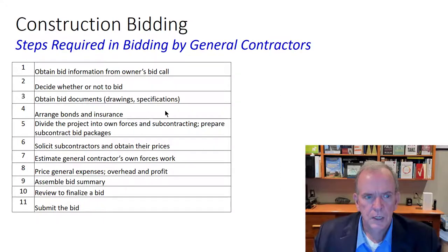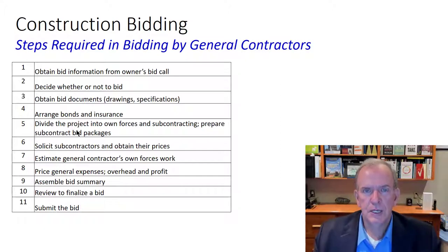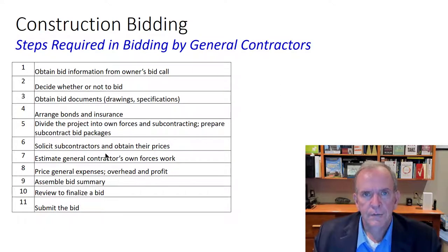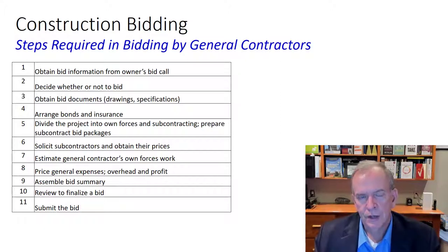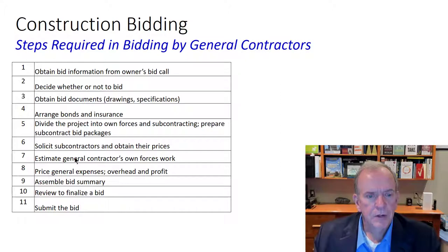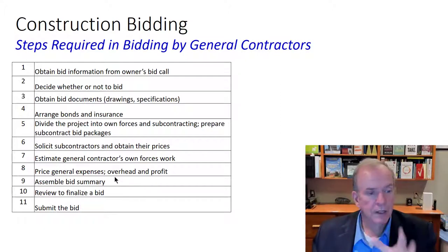You obtain the bid documents — fairly easy these days with electronic formats. You arrange bonds and insurance, divide the project into own forces versus what you'll sub out, prepare subcontract bid packages to get bids from various subcontractors, and then solicit the subs and obtain their prices. You'll find that subcontractors like to give you their price at the very end, very close to when the bid is due, because they don't want you bid shopping — comparing their price with others to lower someone else based on their pricing, which is not ethical.